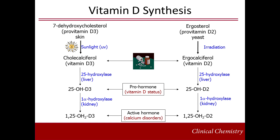Vitamin D synthesis occurs through many steps. It begins with the conversion of a cholesterol derivative through sunlight or radiation yielding vitamin D. Both D2 and D3 forms are converted to 25-hydroxyvitamin D in the liver by the enzyme 25-hydroxylase. 25-hydroxyvitamin D is in turn converted to 1,25-hydroxyvitamin D, the active compound, by 1-alpha-hydroxylase in the kidney.